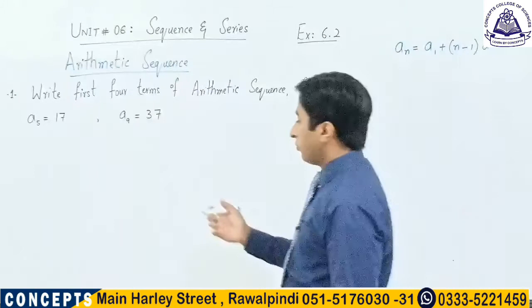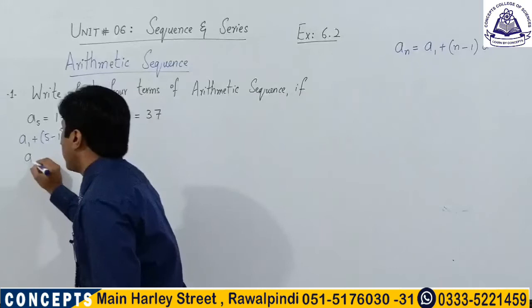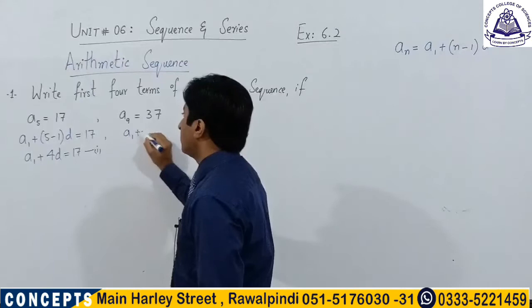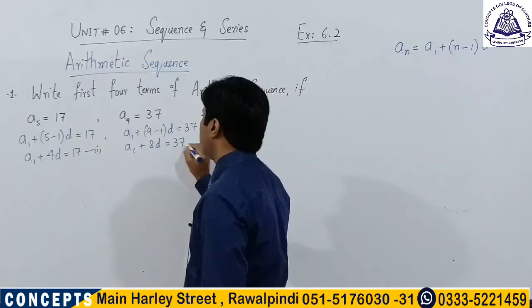So we can write a5 as a1 + (5 − 1)·d = 17, or a1 + 4d = 17. This is equation number 1. Also we can write a9 as a1 + (9 − 1)·d = 37, giving a1 + 8d = 37. This is equation number 2.